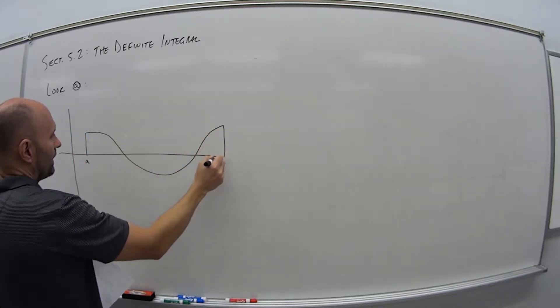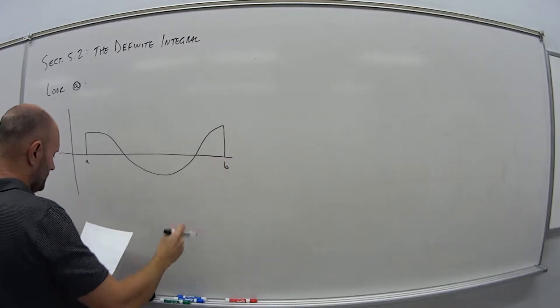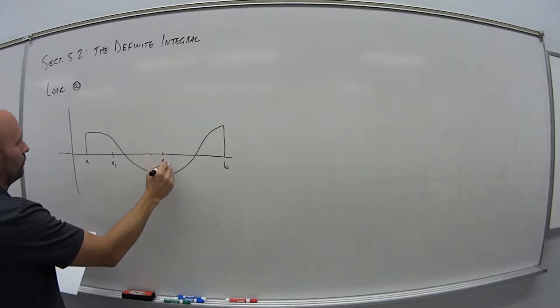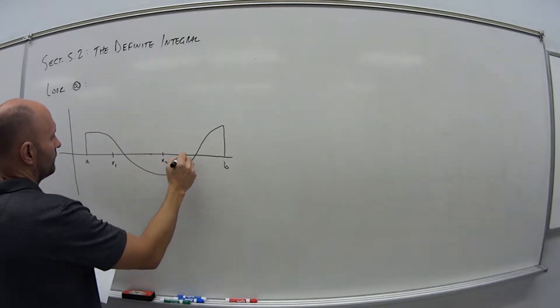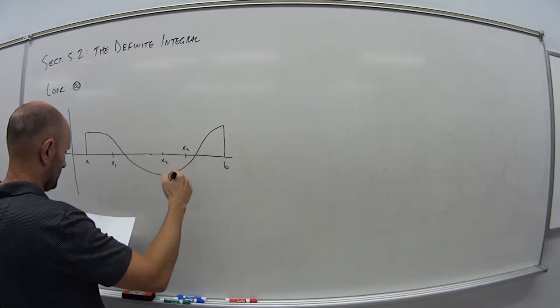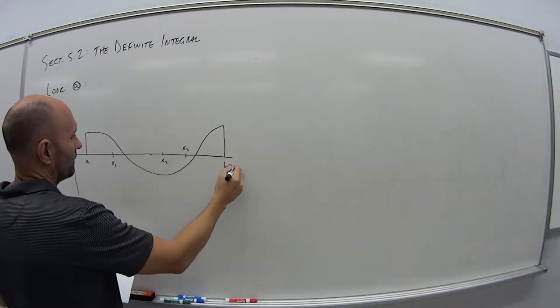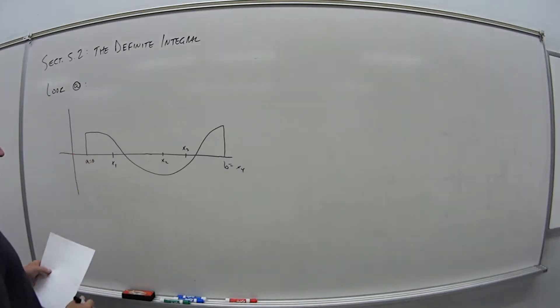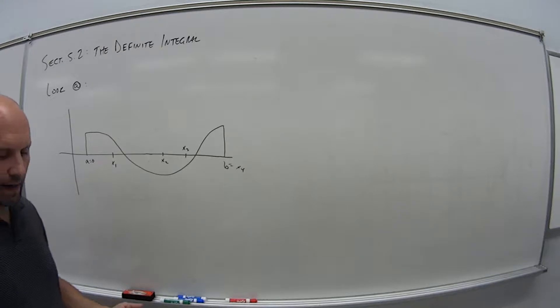But let's look at this one here. Let's say we have endpoints A and B. And let's say I'm not even dividing it equally. Let's say I pick this one here, X1. Then I have another interval, X2. And then X3. And finally, B, we'll call that X4. That's the end of our interval. And we'll call A is 0, the start of our interval.